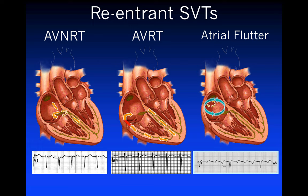Here are the re-entrant SVTs summarized. In AVNRT, re-entry is within the AV node — down the ventricle and up the atrium — so the P-wave is very close to the QRS because they depolarize simultaneously. In AVRT with an accessory pathway, you go down the AV node and up the pathway, so the P-wave is separated a little from the QRS. Atrial flutter is a short circuit within the right atrium showing a sawtooth pattern in the inferior leads.